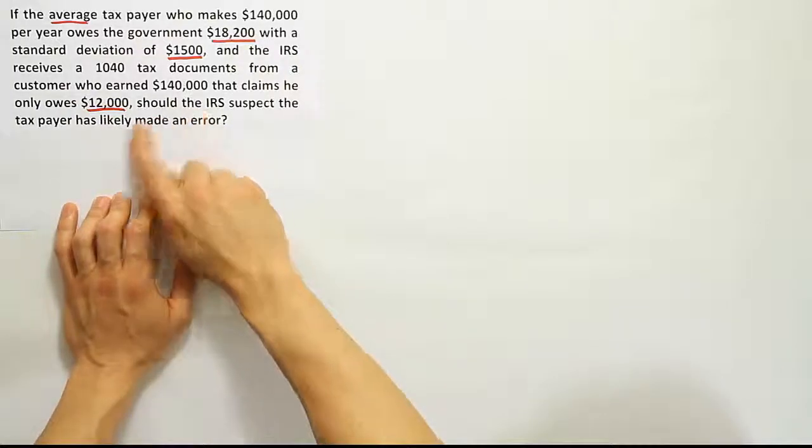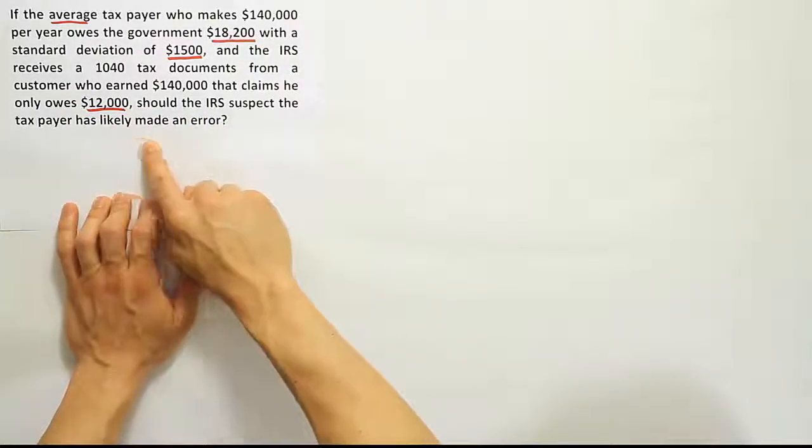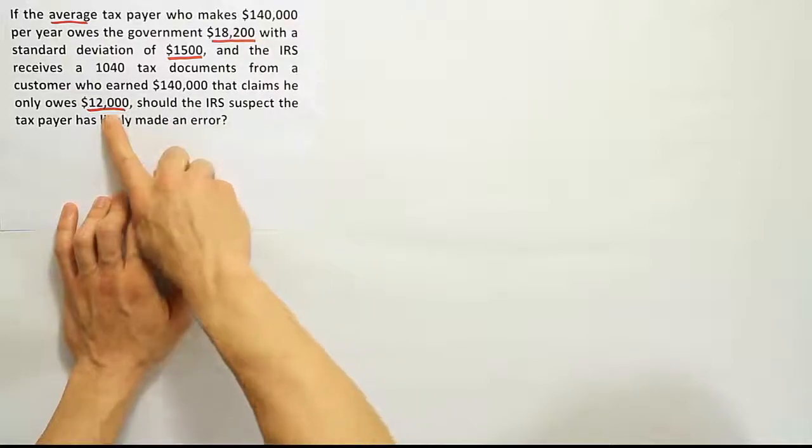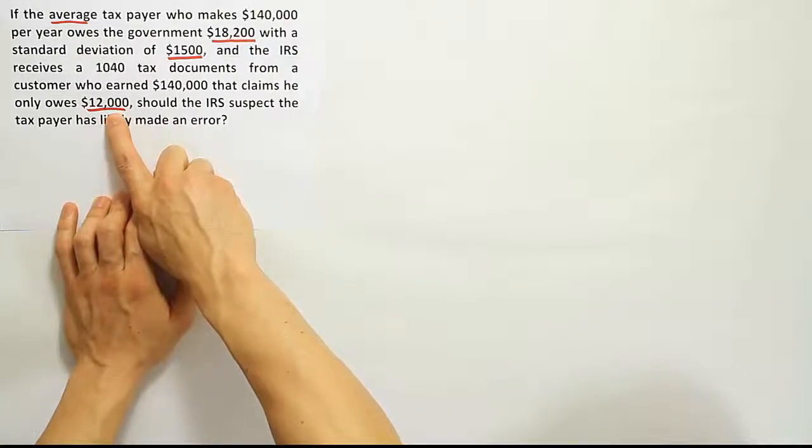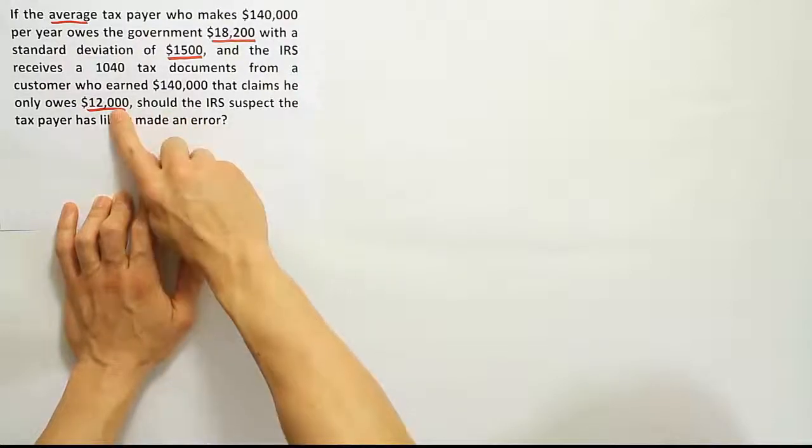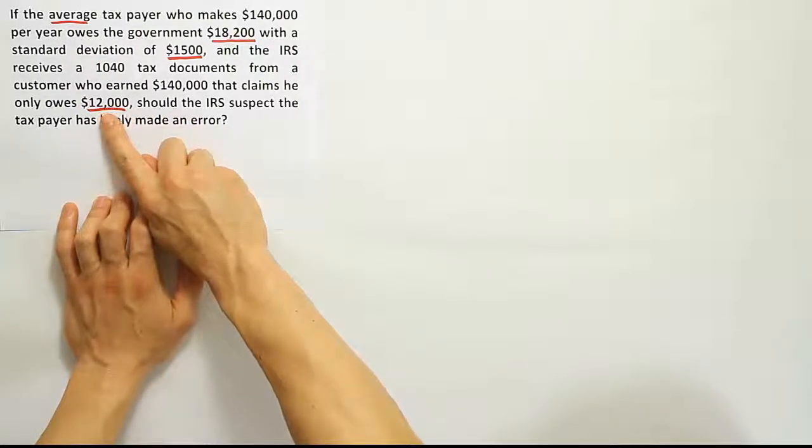This question here, should the IRS suspect that the taxpayer has made an error? The reason why they might think this is an error is because it seems low. So the question is, is it so low that it would seem like an error? So basically they're getting at the idea, is this unusually low?